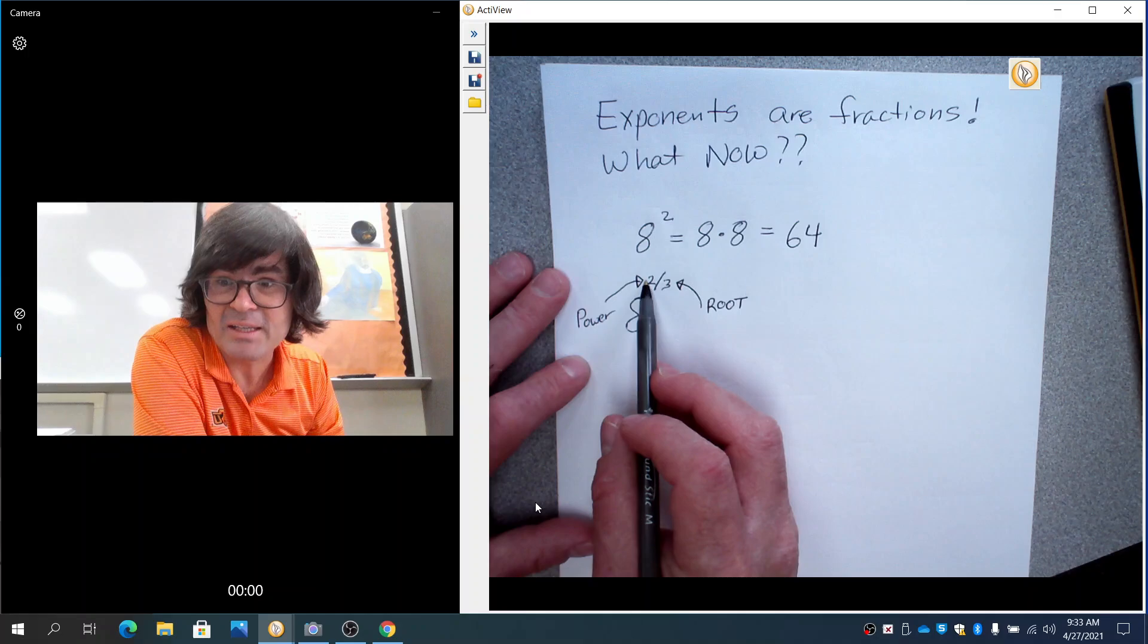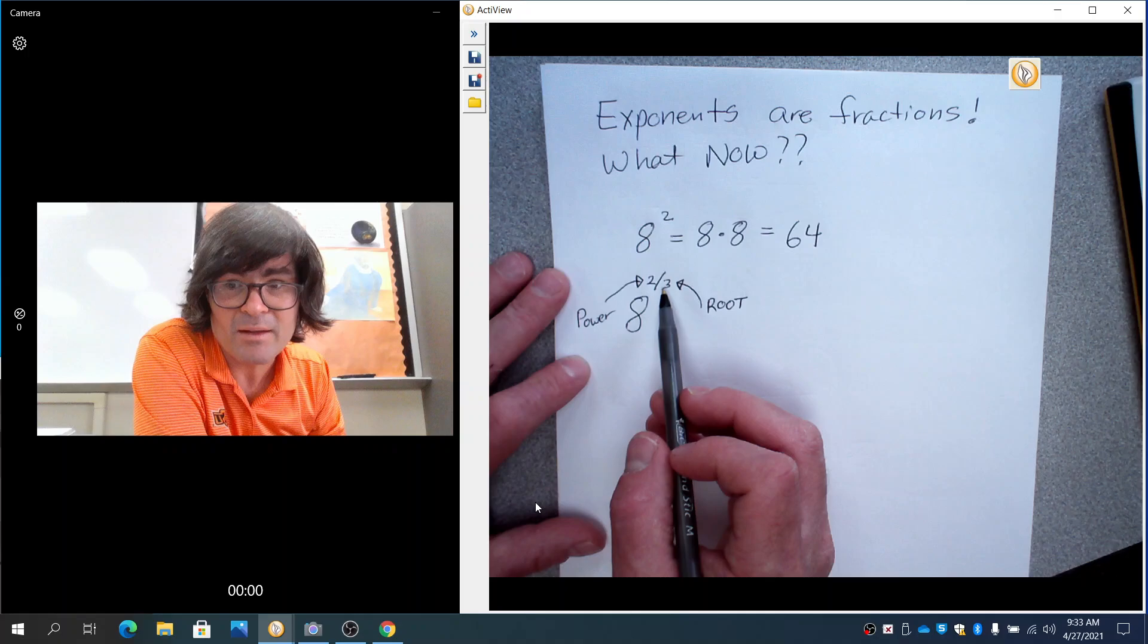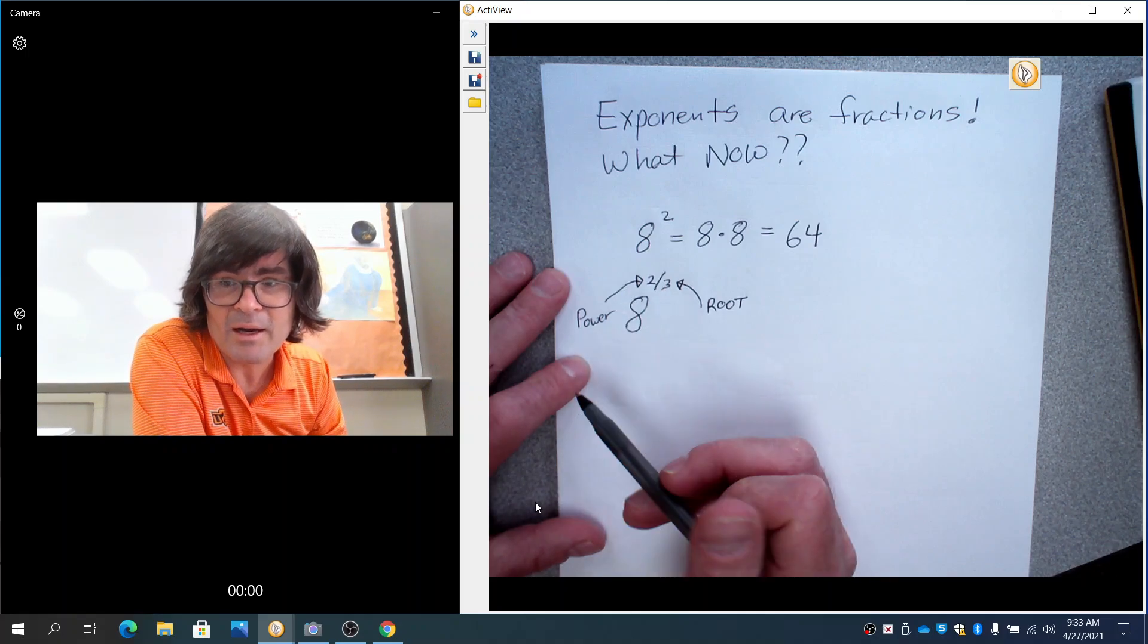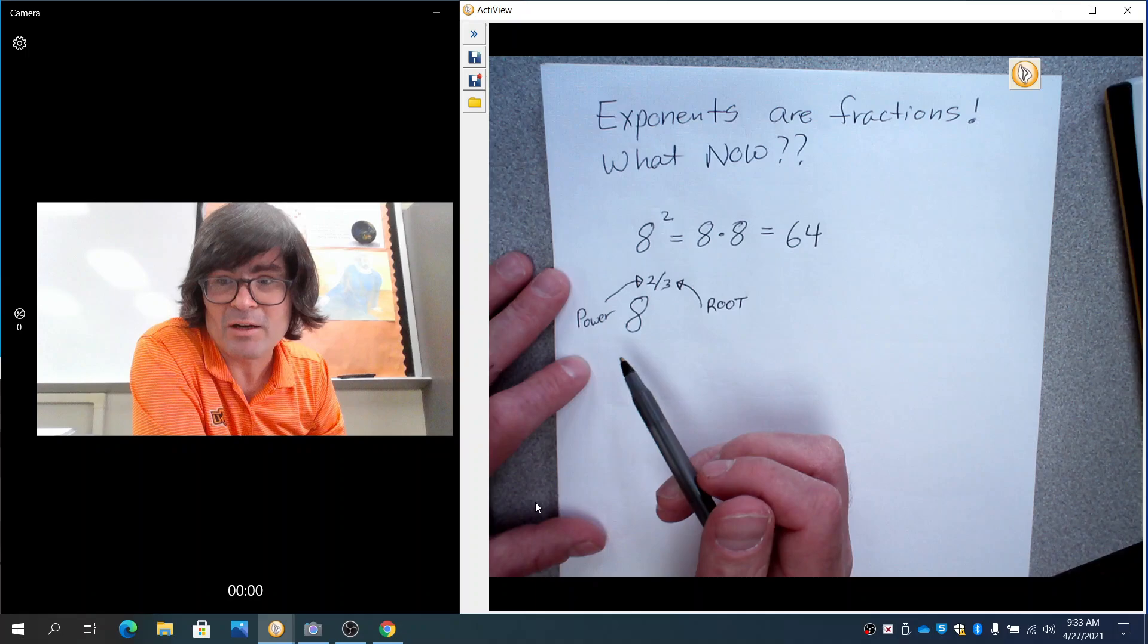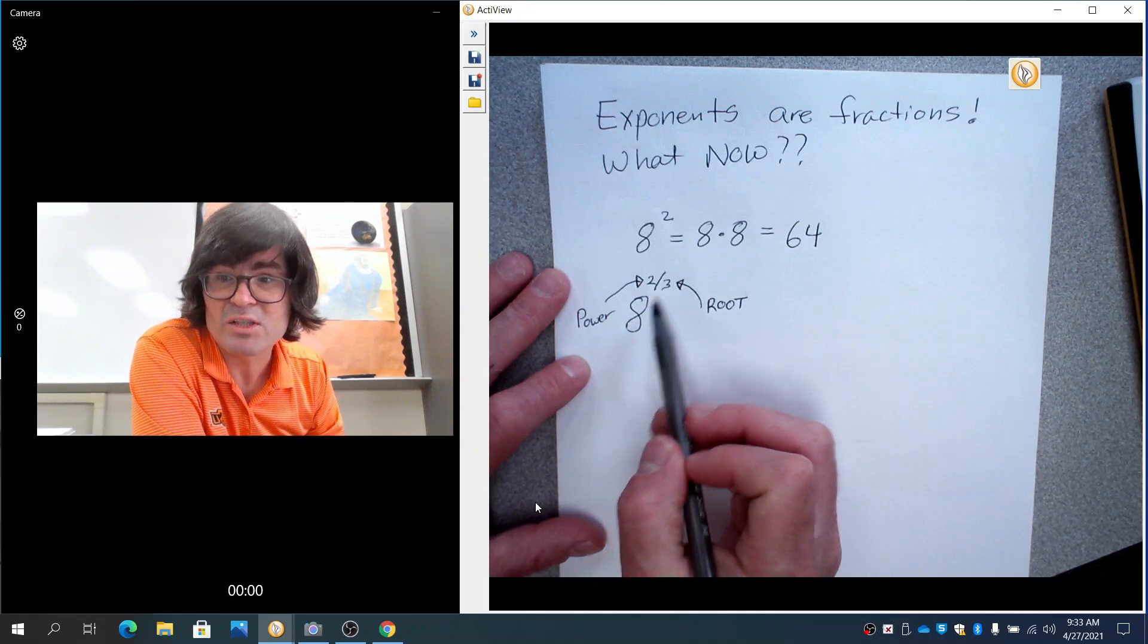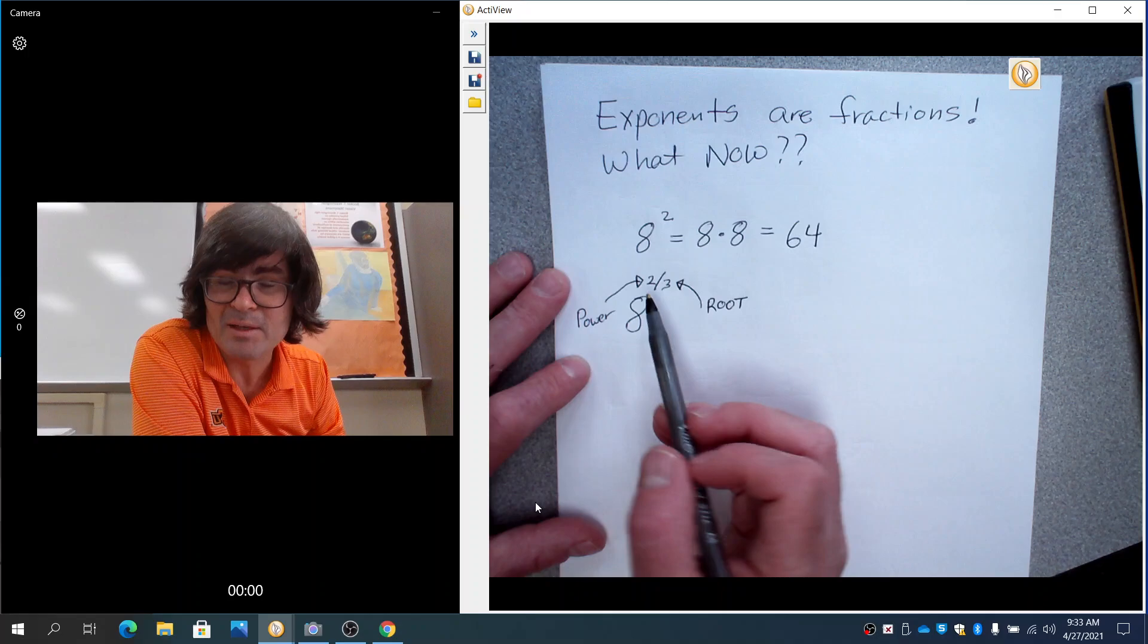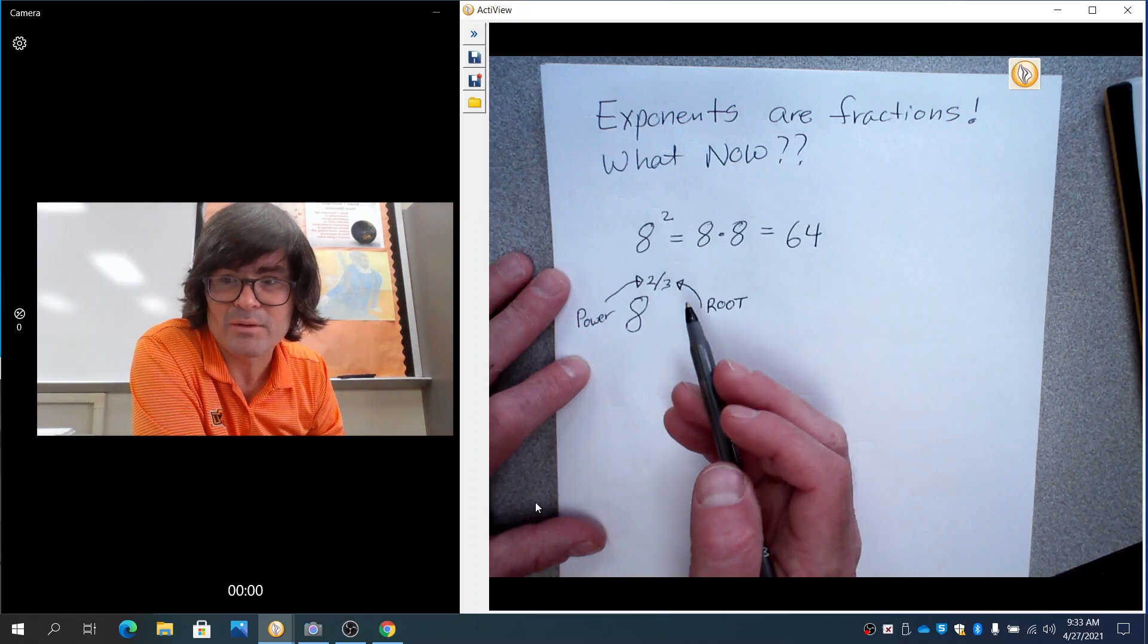So what we're going to do is we're going to take 8 and square it, and we're also going to take the cube root. You can also take the cube root of 8 and then square it. It's up to you. I strongly recommend that you take the root first because I always prefer to go from 8 down to a smaller number than from 8 up to a bigger number. Smaller numbers are easier to work with.